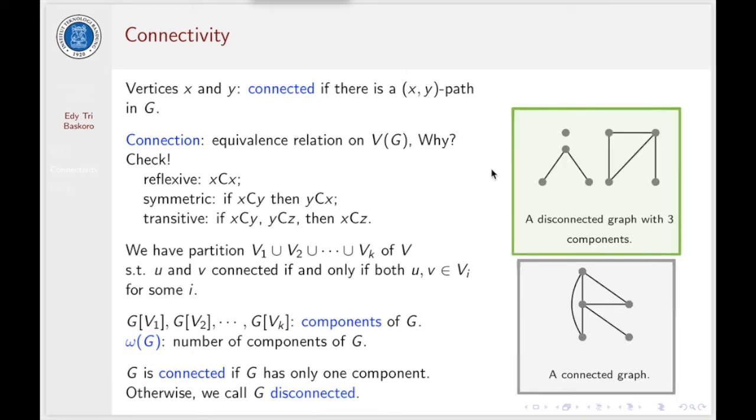This is an example. On the right side here, we have a disconnected graph with three components. This is the first component, second component, and the third component. Below, we have a graph with one component, so we call this graph a connected graph.